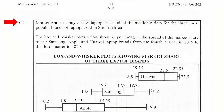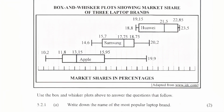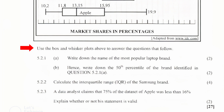Question 5.2: Marius wants to buy a new laptop. He studied the available data for the three most popular brands of laptops sold in South Africa. The box and whisker plots show, in percentages, the spread of the market share of the Samsung, Apple, and Highway laptop brands from the fourth quarter in 2019 to the third quarter in 2020. Apple has a spread between 10.2% and 19.9%, Samsung between 14.6% and 20.2%, and Highway between 18.8% and 23.5%.